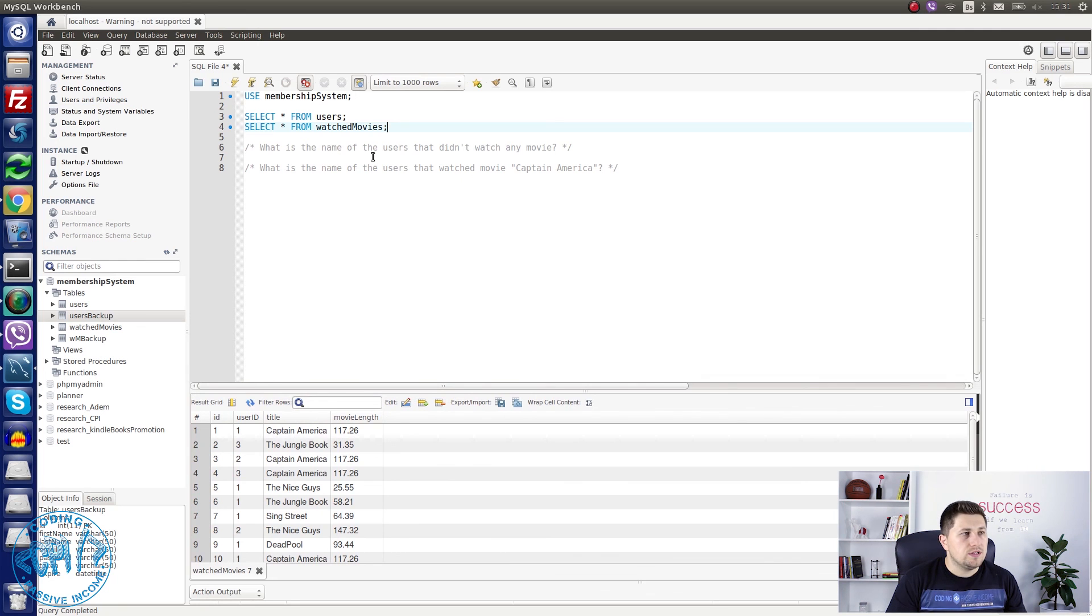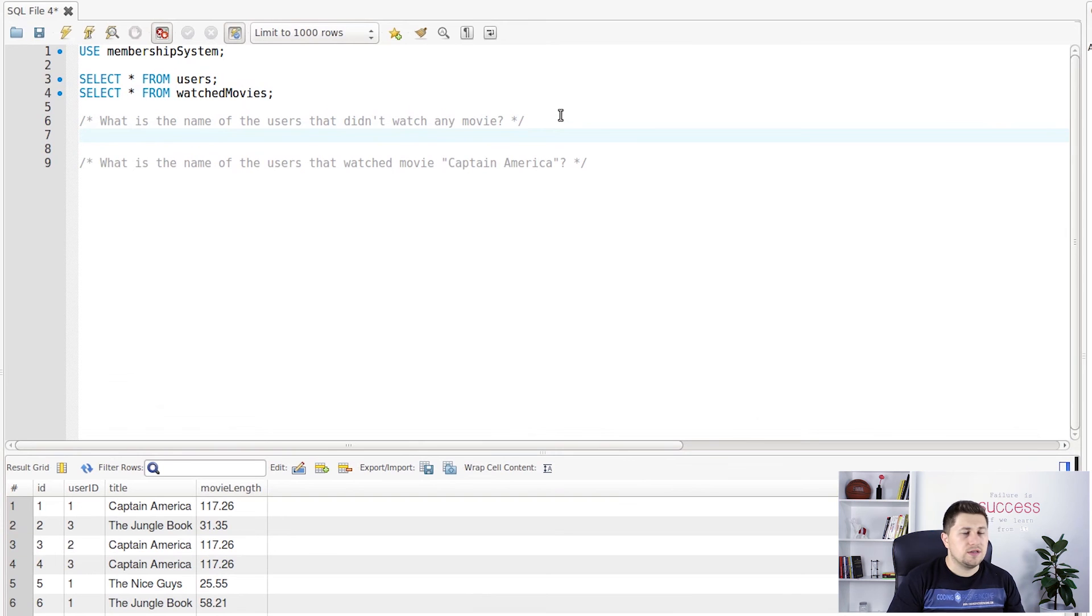So now the question is what is the name of the users that didn't watch any movie. And now we need to write the exact same query that we had on our whiteboard. So we will say SELECT name FROM users WHERE ID NOT IN, and now we need to write the subquery that will just get all the user IDs that we have inside watched movies. So we will say SELECT user ID FROM watched movies. And let's execute this query.